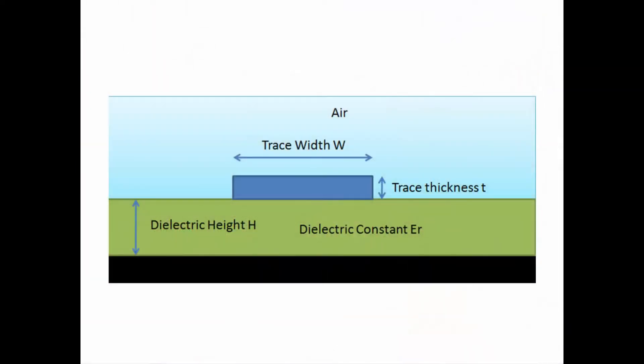When you look at a microstrip, typically you have your copper trace and then you have some sort of dielectric material above your reference plane, whether it be a ground or power. This dielectric material is most often some type of FR4 material. The top trace is normally exposed to air, but in reality most of the time it's actually covered in solder mask, so it does have some different properties there. You can also embed it, which is called an embedded microstrip, where you put a little dielectric material over the top of that.